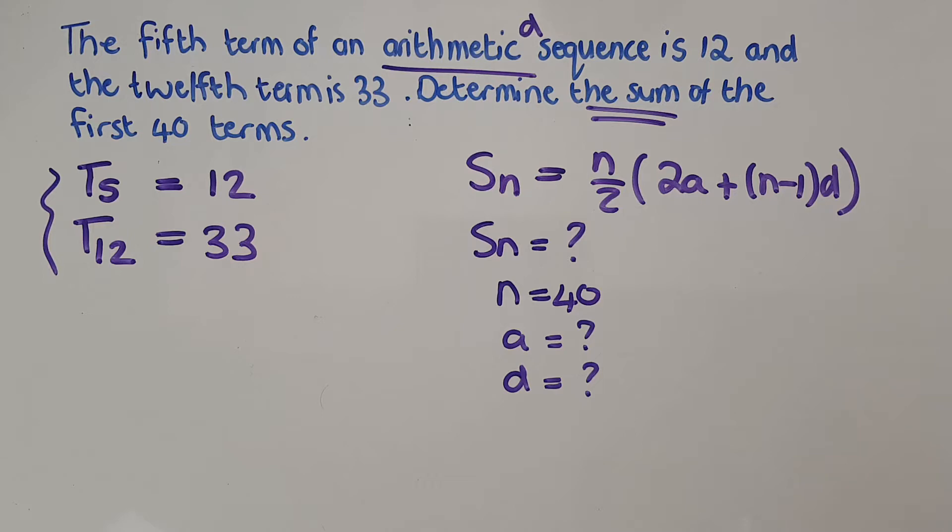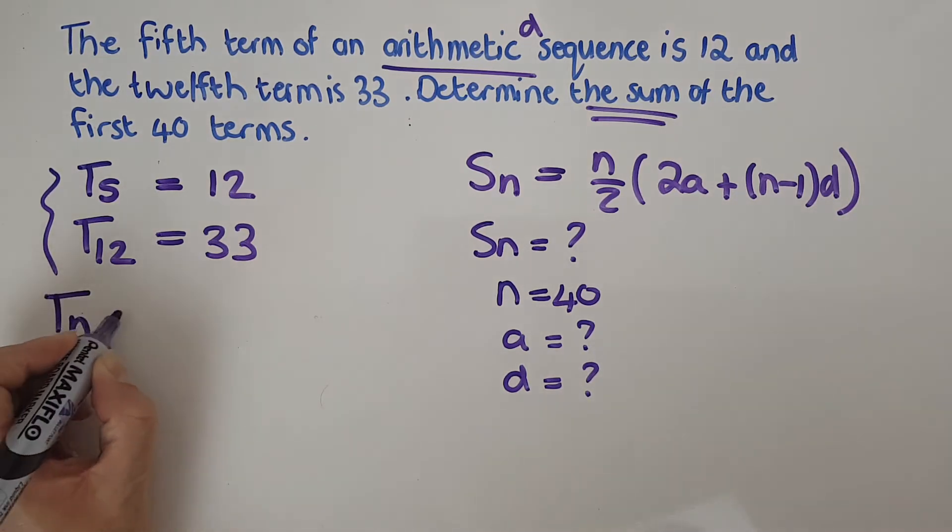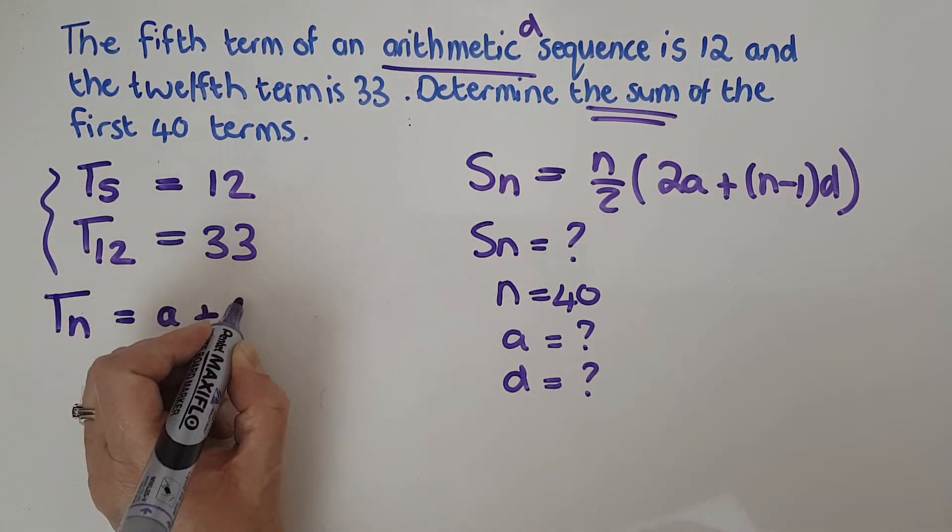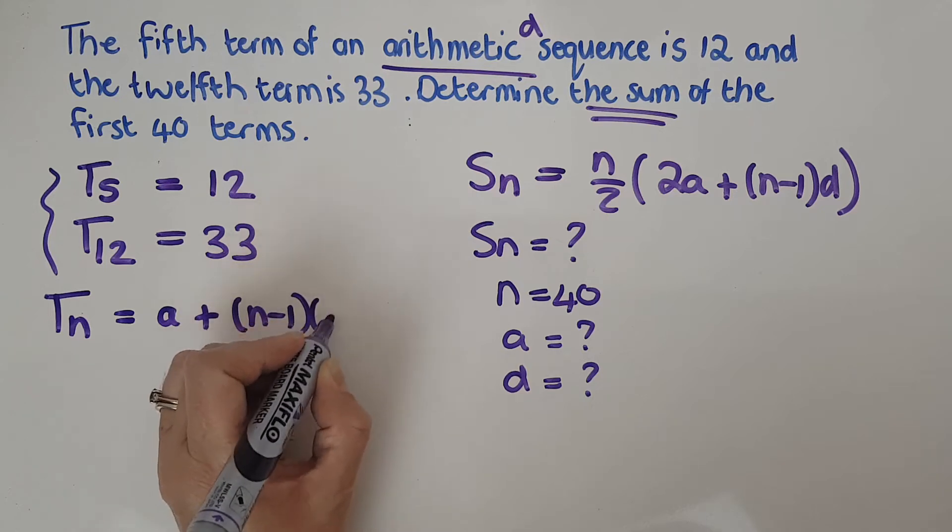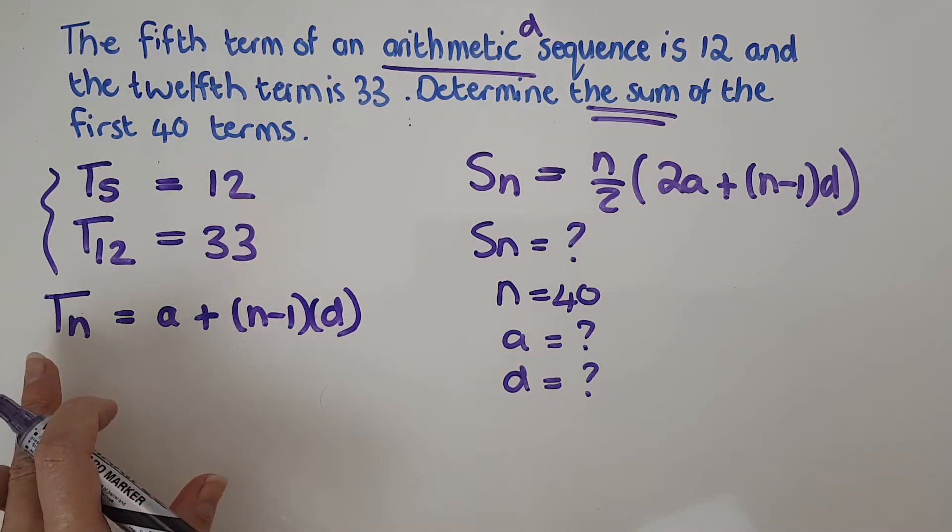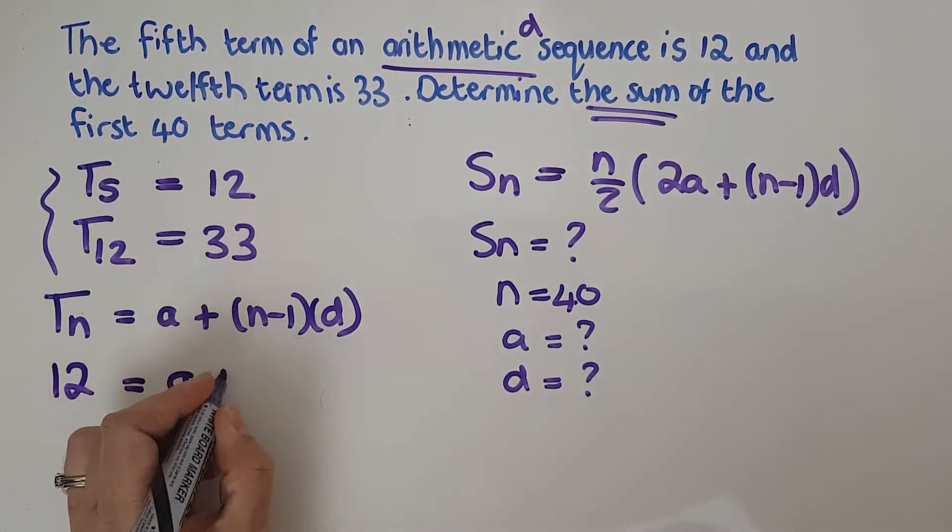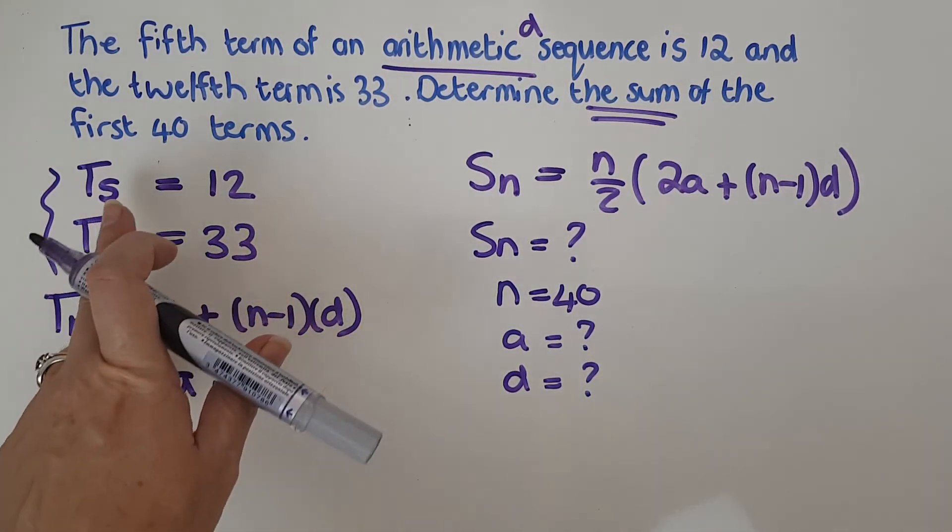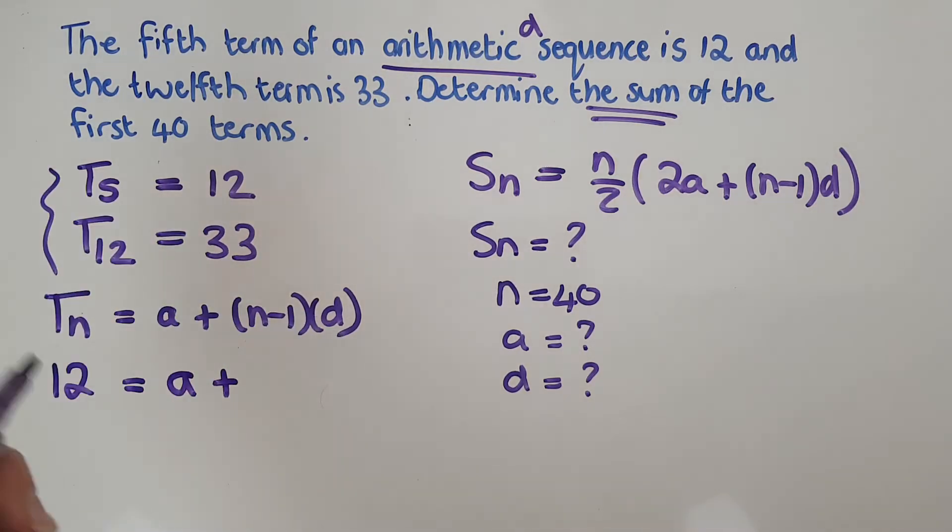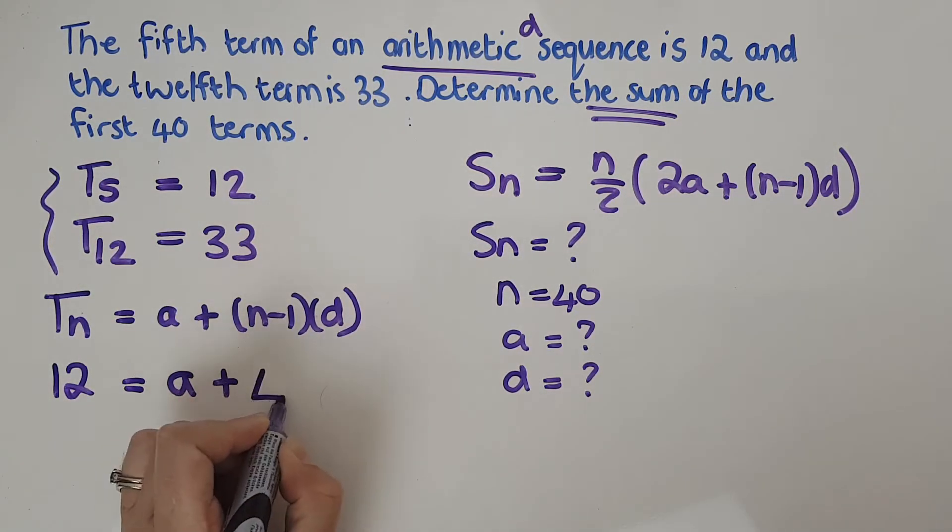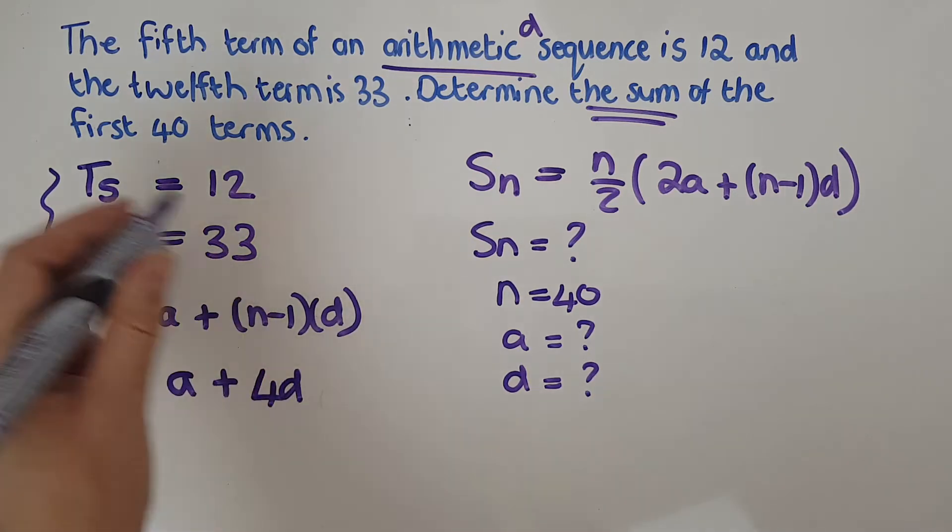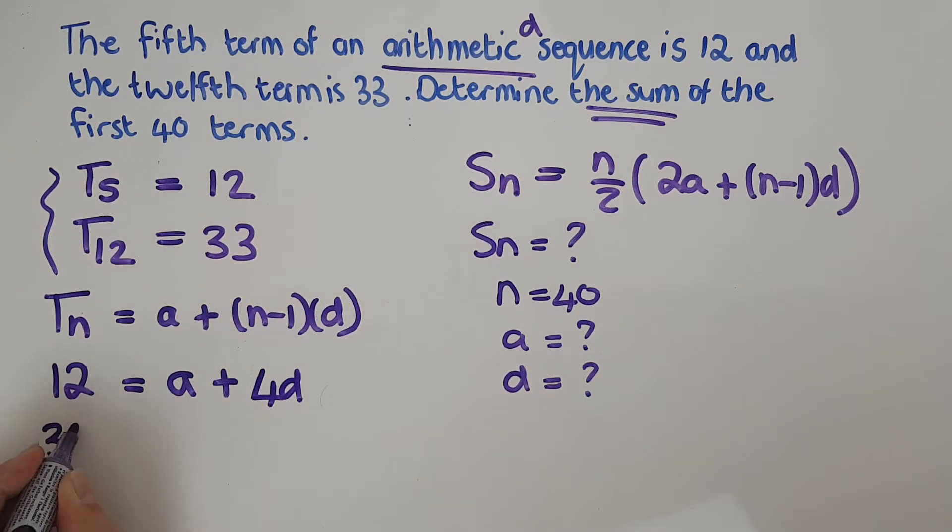Let's go with t5. So in the case of t5, I'm just going to put my general formula here: tn equals a plus (n minus 1)d. So 12 would equal a plus 4d. And if I sub in the other way, I'm going to have 33 equals a plus